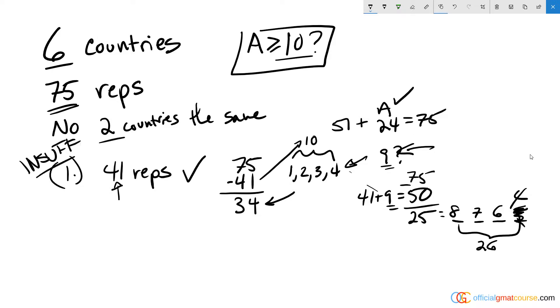Because we found situations in which A could be greater than 10 and also didn't have to be greater than 10, which means I don't know the answer to the question yet.